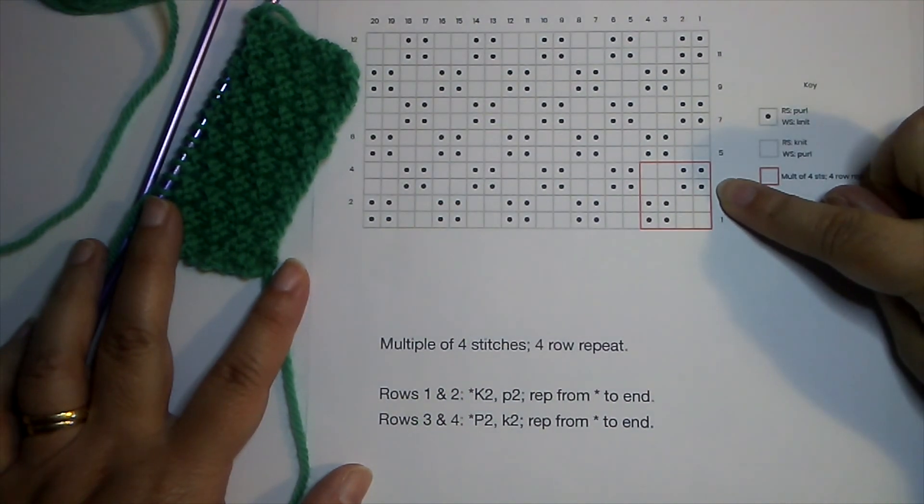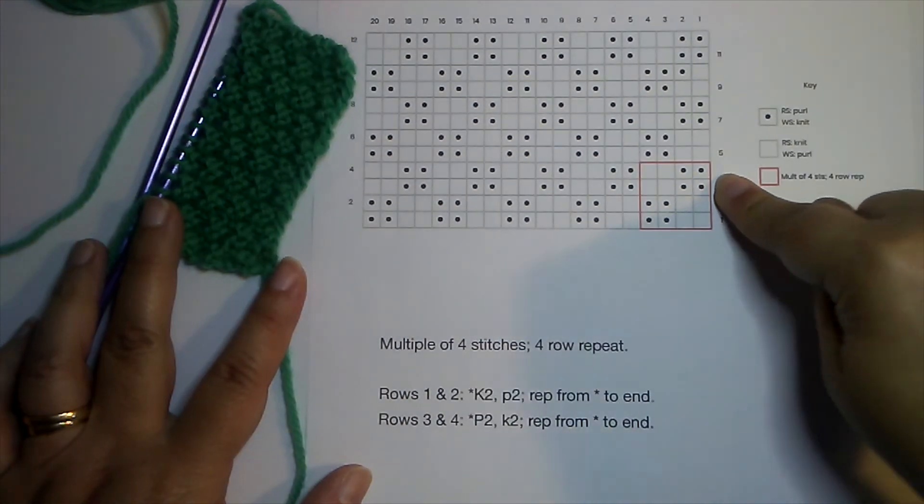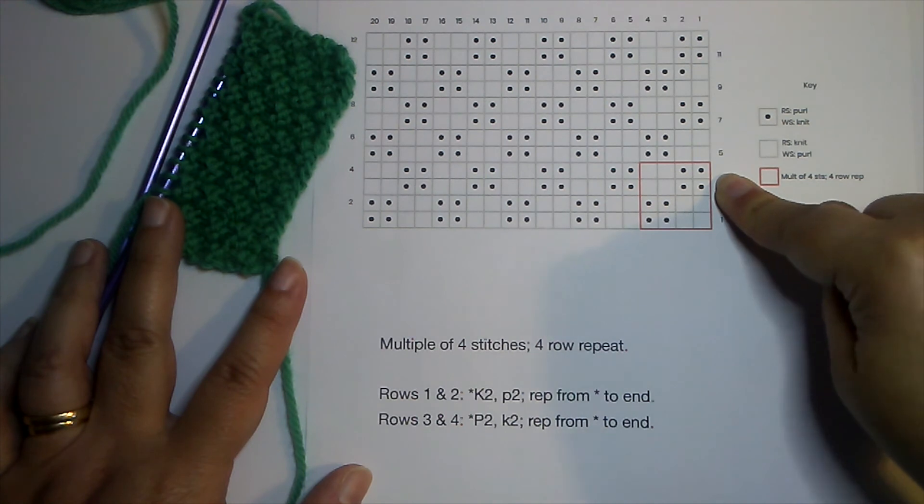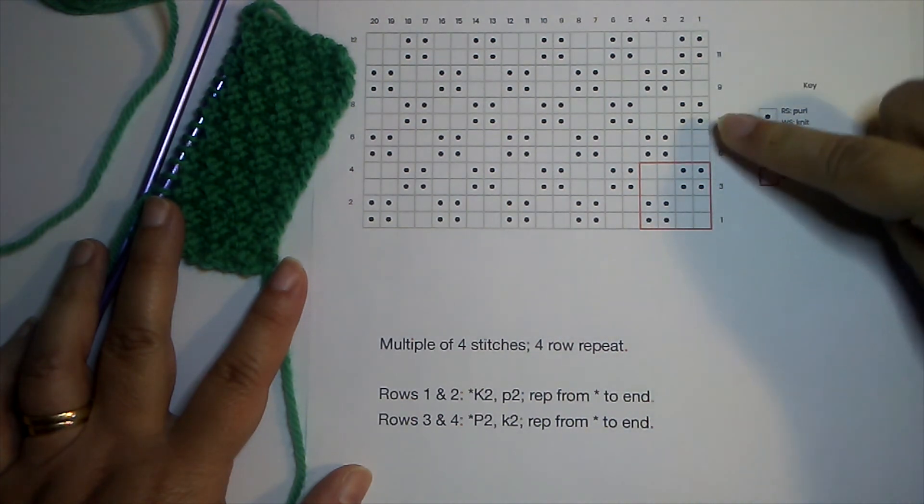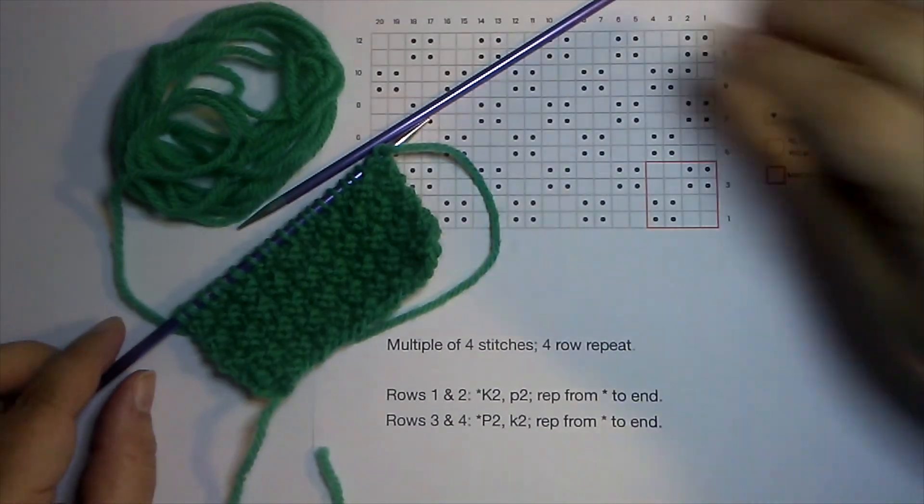And we start with a purl two and then a knit two across the row. And then on row four you would work the stitches as they present by purling and knitting them. And then on row five you would go back to this right here.